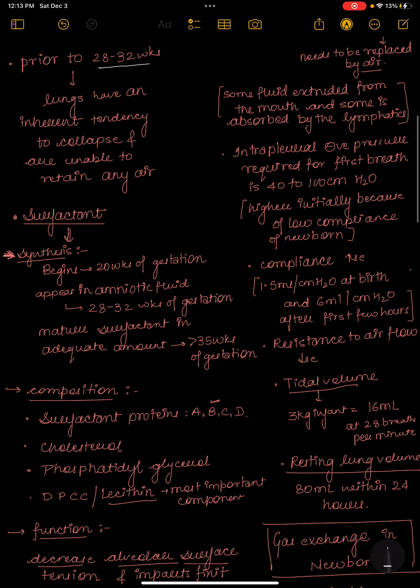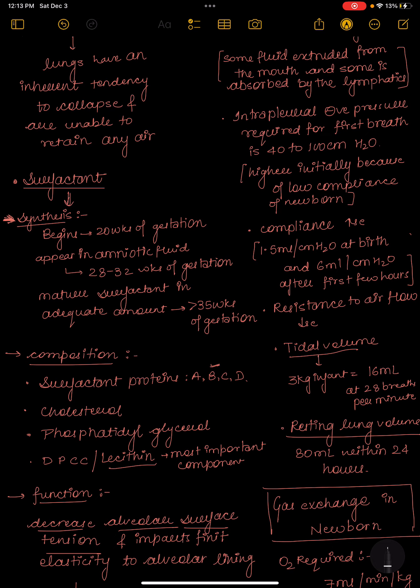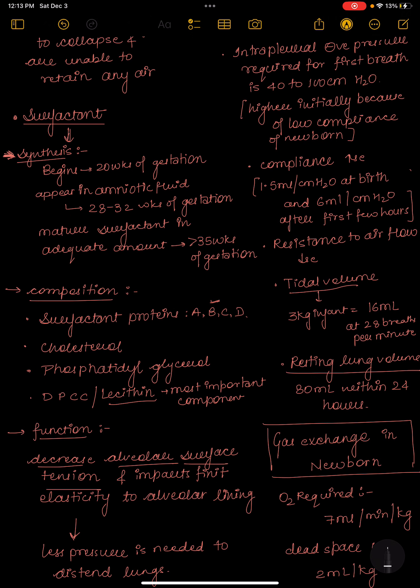In fetal life, surfactants are synthesized during development. The synthesis begins at 20 weeks of gestation, and surfactant appears in amniotic fluid at 28 to 32 weeks of gestation.